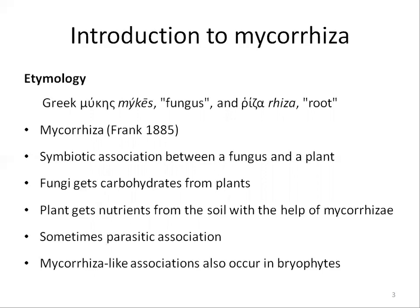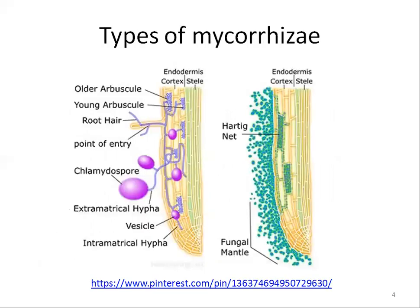Mycorrhiza are located in the roots of vascular plants, but mycorrhiza-like associations also occur in bryophytes. Mycorrhiza are commonly divided into ectomycorrhiza and endomycorrhiza. These two types are differentiated by the fact that the hyphae of ectomycorrhiza fungi do not penetrate into the host cells.